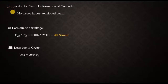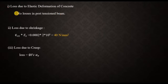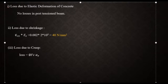The first loss is loss due to elastic deformation of concrete. Since this is a post-tension beam, there is no elastic deformation loss — unless successively prestressed tendons are mentioned, which they are not here. The second loss is loss due to shrinkage. Using the formula: loss = epsilon_CS × ES = 0.0002 × 210×10⁵ = 40 N/mm². Be careful with the shrinkage value substitution.